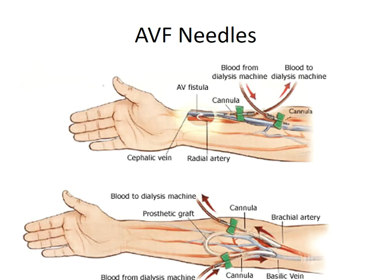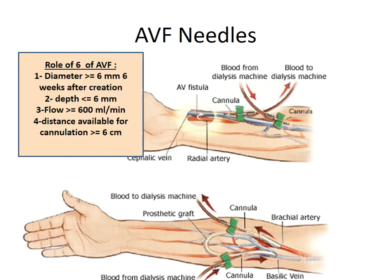For AV fistula needles, you must apply the rule of six before cannulation. The diameter of the AV fistula should be equal to or greater than 6 mm, achieved after six weeks of creation. It should be superficial enough with a depth less than 6 mm. It must provide high flow, and the distance available for cannulation should be greater than or equal to 6 centimeters.